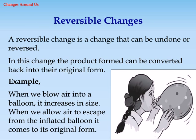Reversible Changes. A reversible change is a change that can be undone or reversed. In this change, the product formed can be converted back into its original form. Example: when we blow air into a balloon, it increases in size. When we allow air to escape from the inflated balloon, it comes back to its original form.